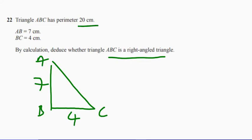Now it tells me the perimeter as well. So the perimeter's 20, so take away the 7 and the 4, so that's 9. So the question is, is this a right-angle or not?